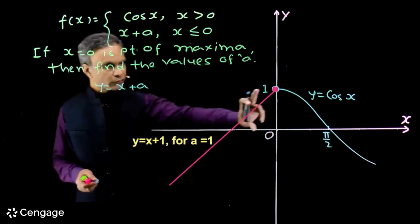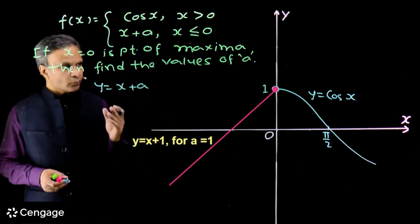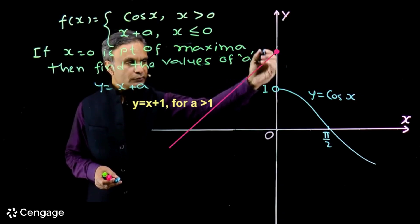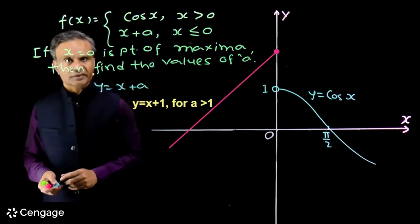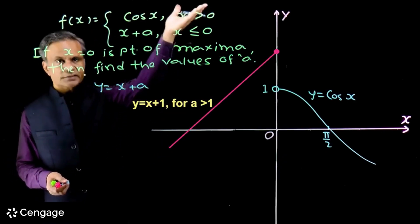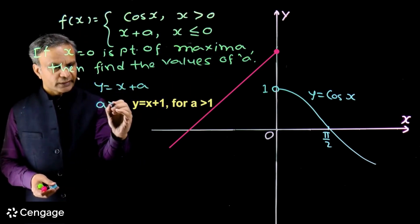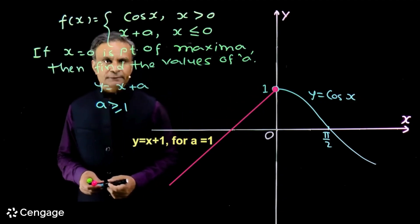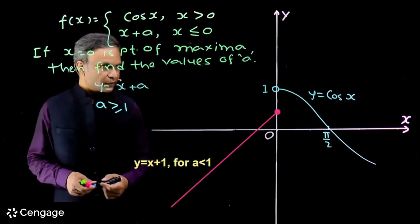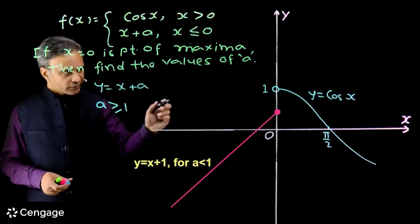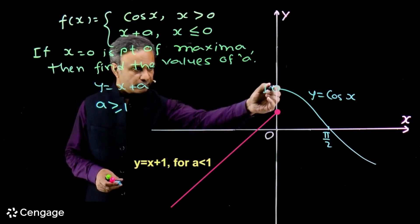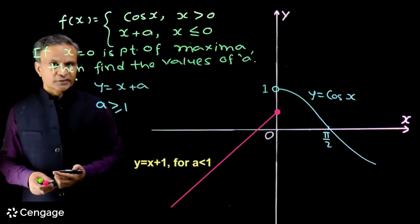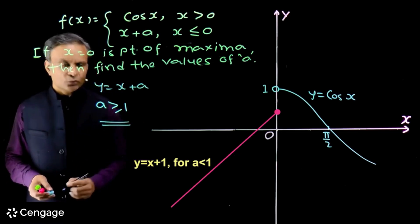If a > 1, the line's y-intercept is above 1, so the line value at x=0 is above the cos branch value — x=0 is still a point of maxima. We can shift the line upward and it remains valid. However, if a < 1, the line shifts below and x=0 is no longer a point of maxima. Therefore the values of a are a ≥ 1.